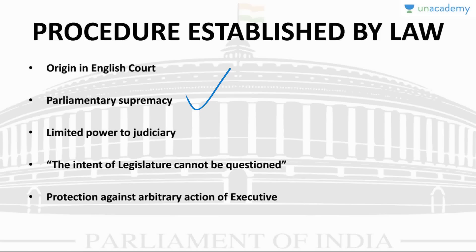The intent of the lawmaking body cannot be questioned under this doctrine. If strictly followed, procedure established by law can compromise the life and personal liberty of the individual due to unjust laws. For example, if Parliament says all calls of citizens will be recorded — that is unjust — but if it makes the law and follows procedure properly, the Supreme Court may say it is following procedure established by law. To avoid such situations, the Supreme Court stressed the importance of due process of law.